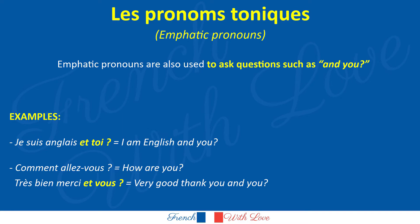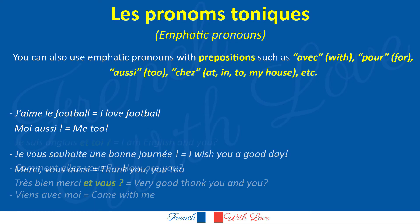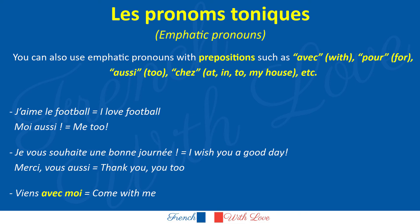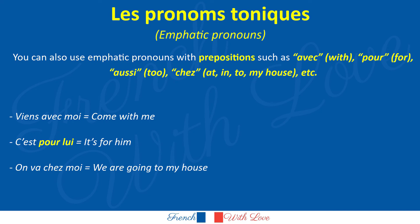You can also use emphatic pronouns with prepositions such as avec, pour, aussi, chez, etc. For example: J'aime le football. Moi aussi. — I love football. Me too. Je vous souhaite une bonne journée. Merci, vous aussi. — I wish you a good day. Thank you, you too. Viens avec moi. — Come with me. C'est pour lui. — It's for him. On va chez moi. — We are going to my house.